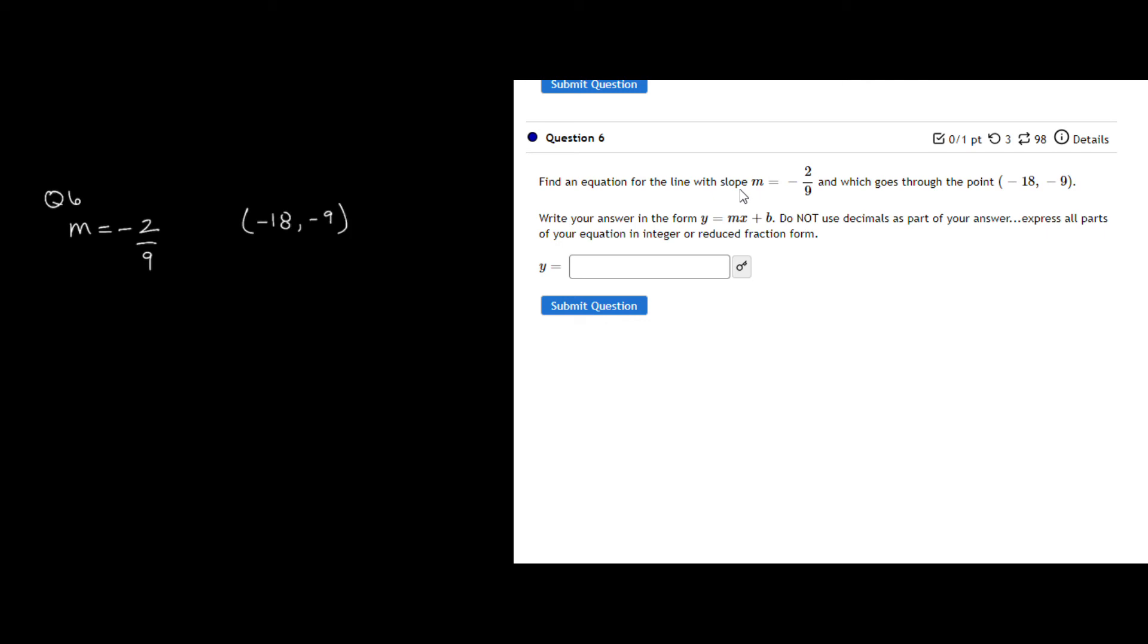So again, the first step is to use that idea where I have my equation y is equal to mx plus b. And I'm going to put m in for my slope, and I am going to put x in, and my y in. And the whole goal is to find and solve for b. So y is equal to negative 9, so it's negative 9 is equal to negative 2 over 9 times my x value, which is negative 18. And I'm going to put that negative 18 over 1. It just makes it a little easier to deal with. And then plus b.